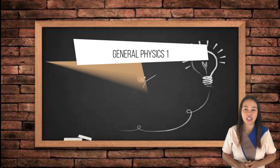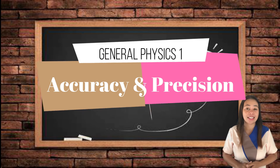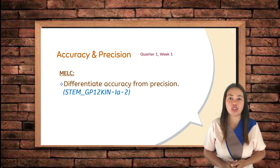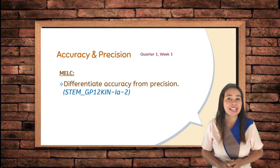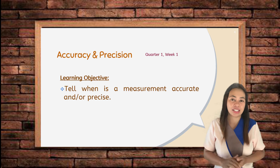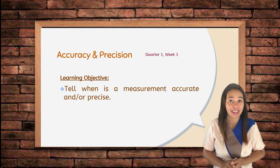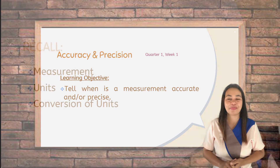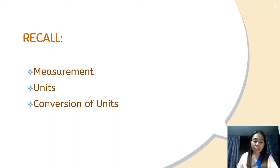Today's lesson is about accuracy and precision. And still, it is accurate according to the DepEd's most essential learning competencies for Week 1, and that is to differentiate accuracy from precision. At the end of this lesson, you should be able to tell when a measurement is accurate and or precise. Last time, we discussed about measurements and the different types of units, as well as how to convert these units from one to another.